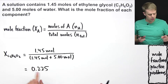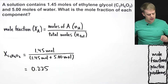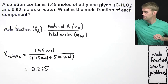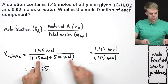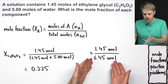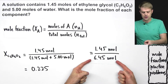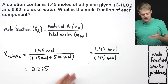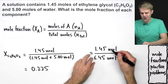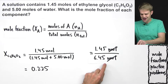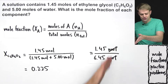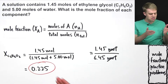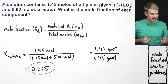What are the units of the final answer? When we add the two numbers in the denominator, we get 1.45 moles over 6.45 moles. Moles over moles cancels out and we get rid of the units. So our final answer has no units — it's what's called a dimensionless quantity. Mole fraction has no units.